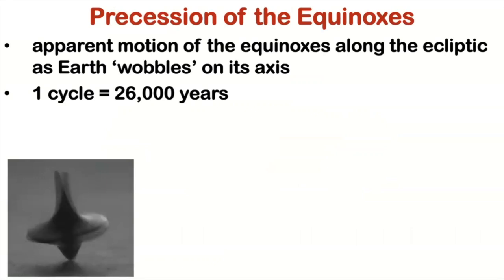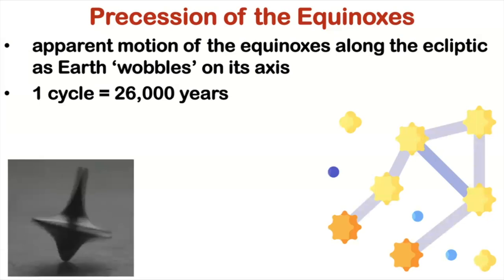Now, you have to remember that as the Earth wobbles, the position of the stars in the sky appears to shift over time. So this means that over the course of several thousand years, the constellations we see in the night sky will appear to move slightly. For example, let's take the constellation of Libra. Right now, it's located in a certain part of the sky. But in a few thousand years, it will have moved to a different part of the sky.